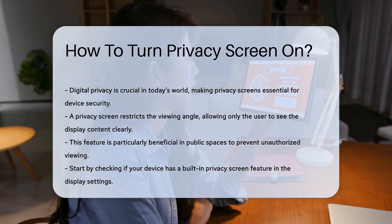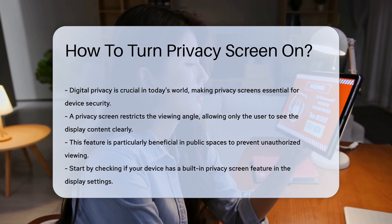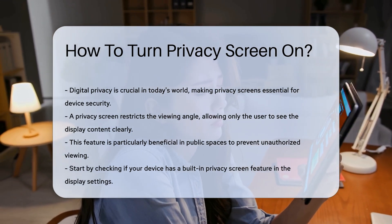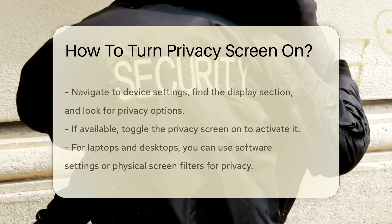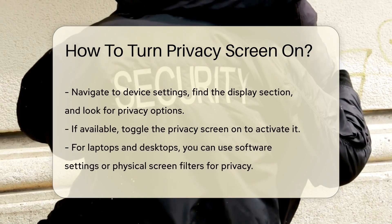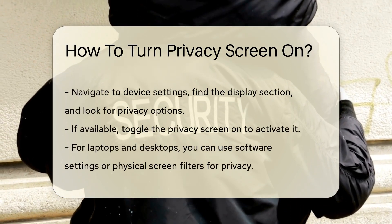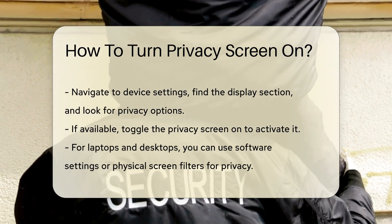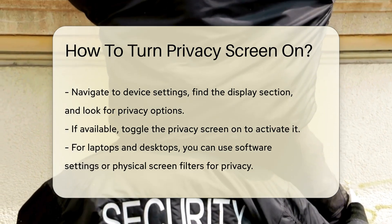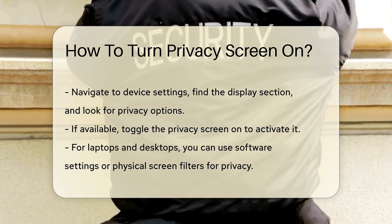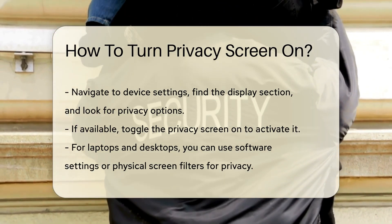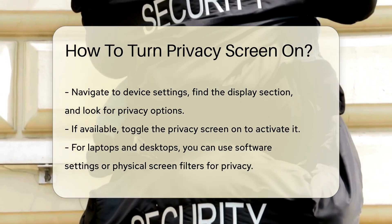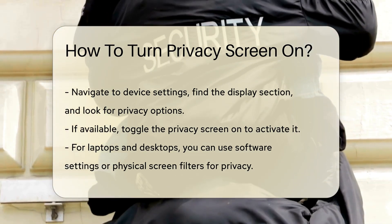These options may vary depending on the operating system. For instance, Android devices often include a privacy screen feature within the display settings. To enable a privacy screen on an Android device, access the settings menu, navigate to the display section, then look for an option labeled privacy or screen protector.